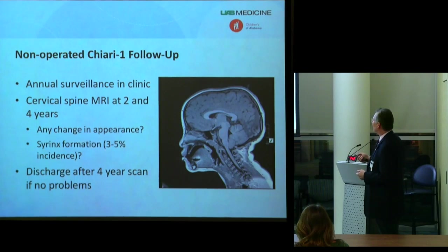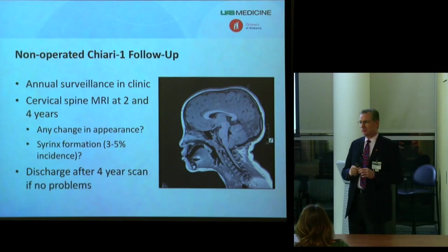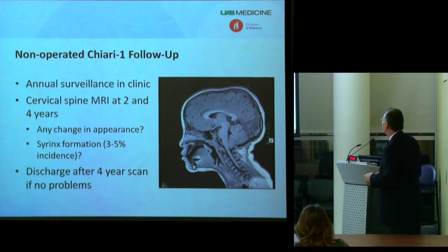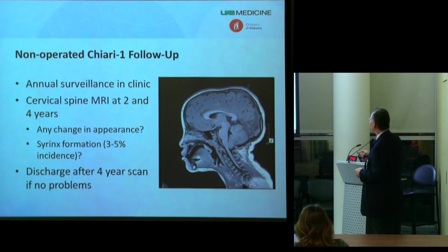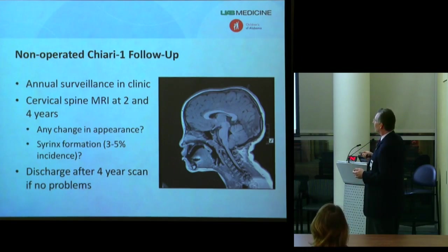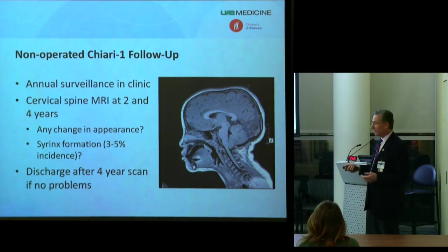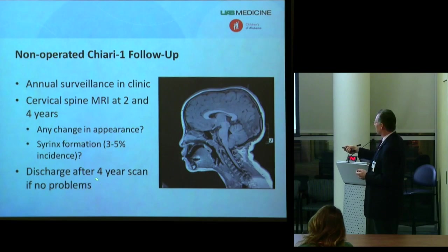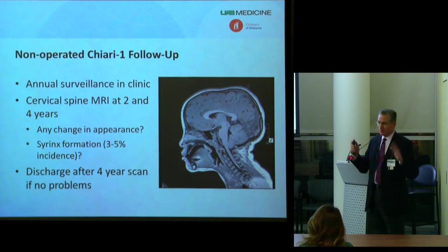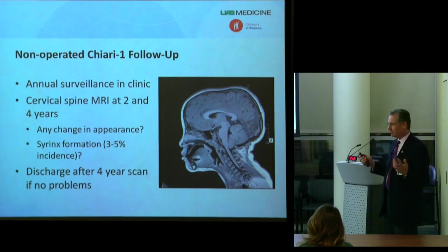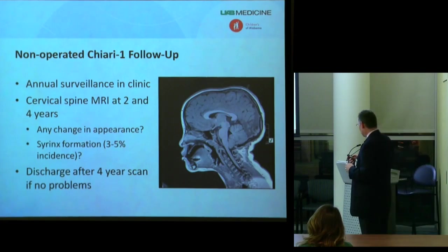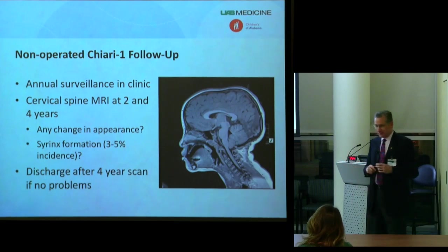Occasionally over time you'll see something that initially looks relatively innocent and then progresses to look worse as the patient develops associated symptoms. In a handful of patients over the years, you'll see either no syrinx initially and then a syrinx later, or a mild dilation of the central canal that gets bigger over time. If there are no symptoms and no appreciable change — or if the tonsillar herniation actually regresses — then after the second scan if everything is stable or improved, I'll tell them they don't need to come back unless something changes.